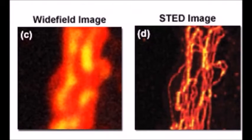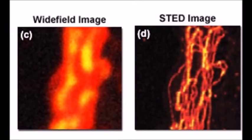STED microscopy has a few disadvantages. It requires complex microscope configurations, as well as specialized and potentially expensive components. Additionally, the high-powered lasers used in this process often cause rapid photobleaching, and may even damage the sample, which can cause aberrations.